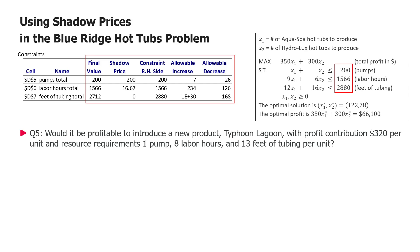Remember we had two products in our product mix problem where we were planning how many AquaSpa and HydroLux hot tubs to produce in order to maximize profits subject to some resource constraints. Now suppose someone comes to us with a third possible product called Typhoon Lagoon, a new hot tub that we could produce and they tell us we estimate the profit contribution will be 320 dollars per unit and we also estimate that the resource requirements will be one pump, eight labor hours, and 13 feet of tubing.